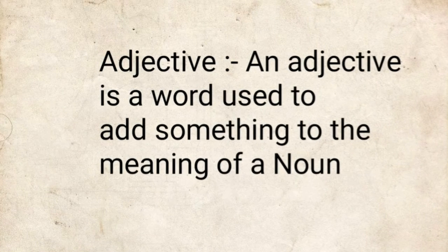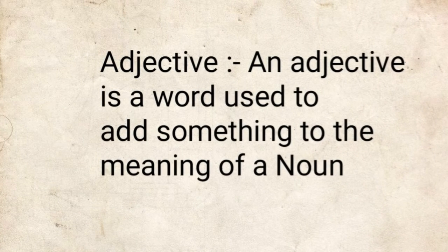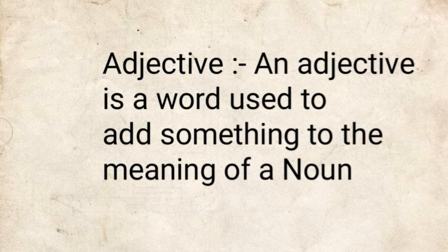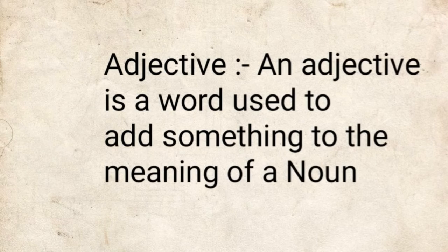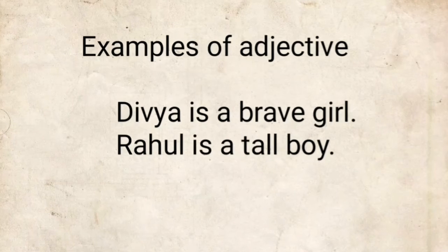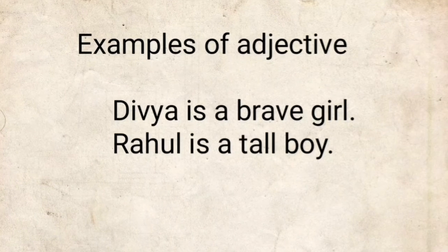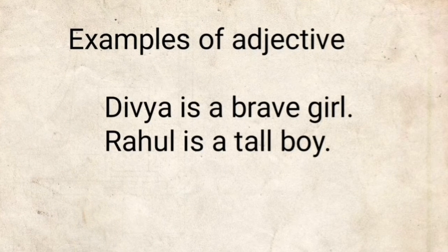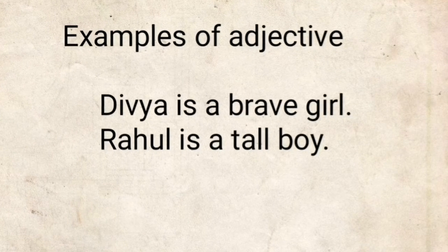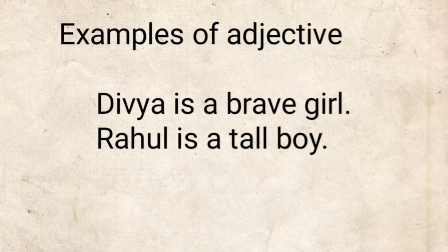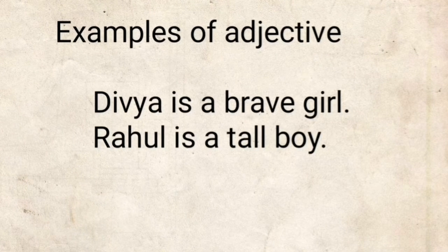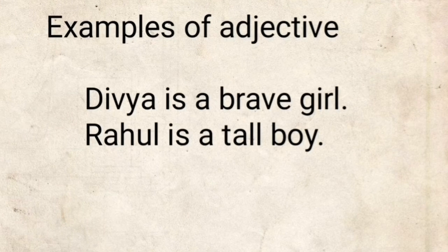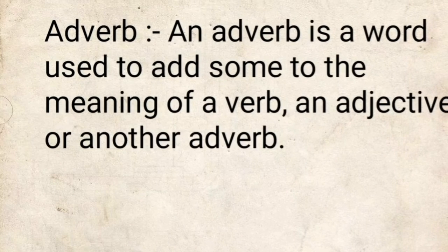An adjective is a word used to add something to the meaning of a noun — it gives additional information about the noun. For example: 'Divya is a brave girl' — here 'brave' is the adjective, adding a quality to the noun. Another example: 'Rahul is a tall boy' — 'tall' describes his quality.